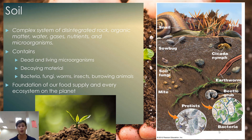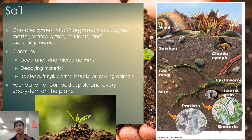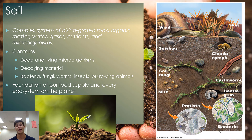Soils provide the foundation for both our food supply and every terrestrial ecosystem on the planet. We're keeping marine ecosystems separate. For terrestrial systems, every food chain begins with primary producers, which get all of their nutrients from soil. So without good, healthy soils, we cannot build a larger food web or a highly complex and diverse ecosystem. Without soils, none of these complex terrestrial ecosystems would be possible.